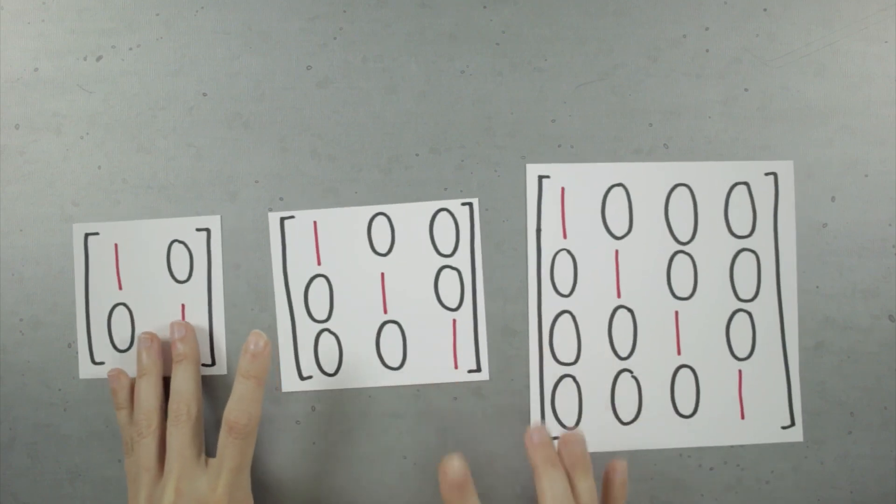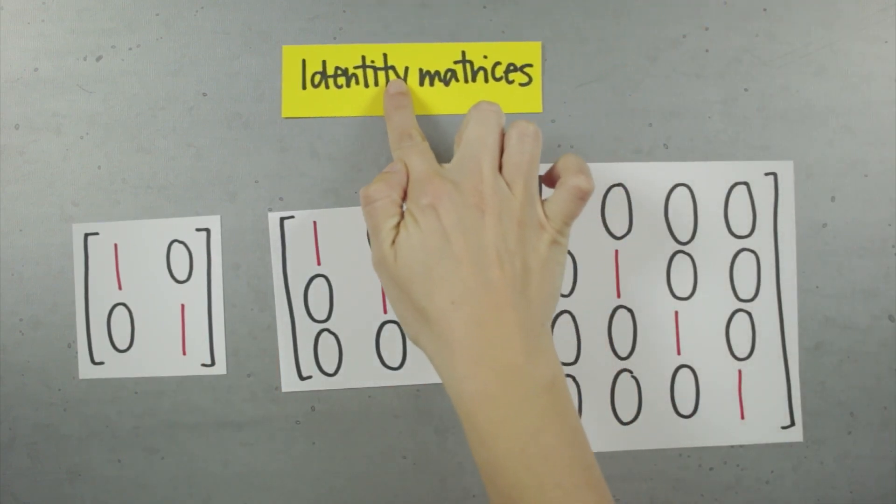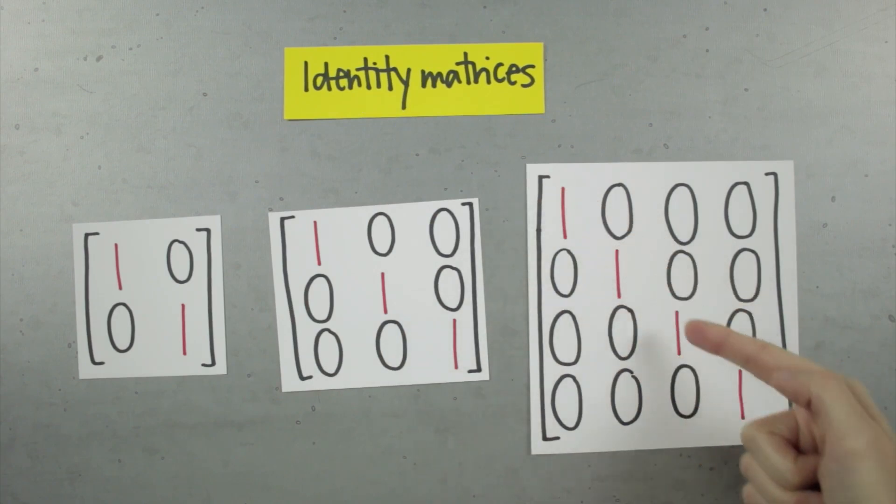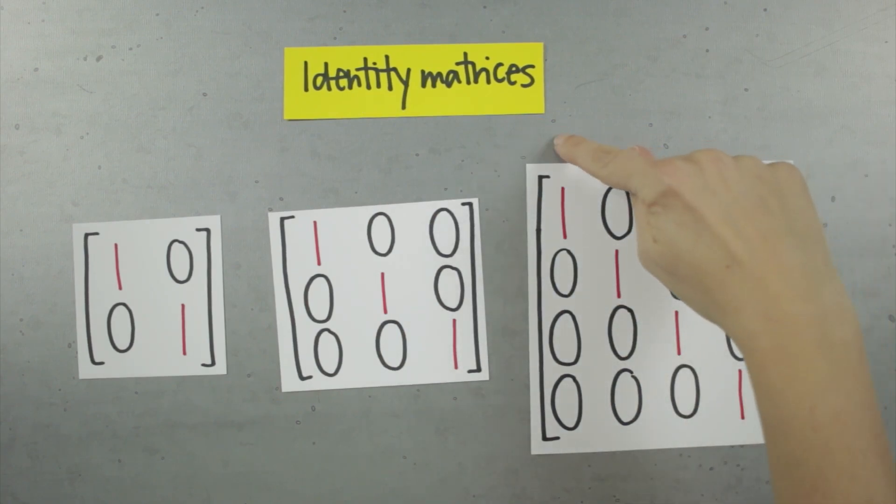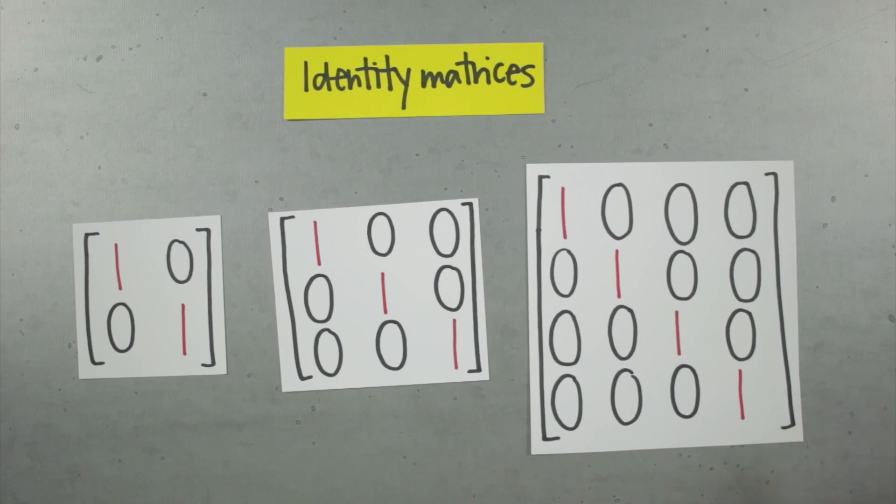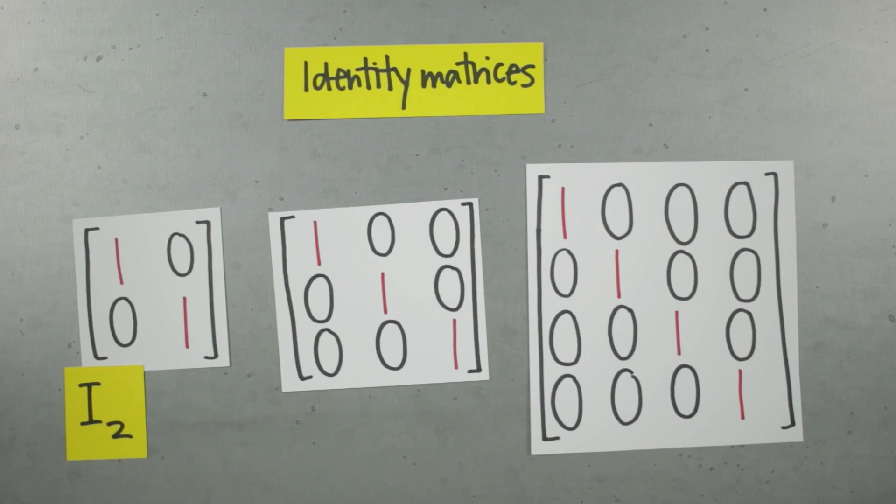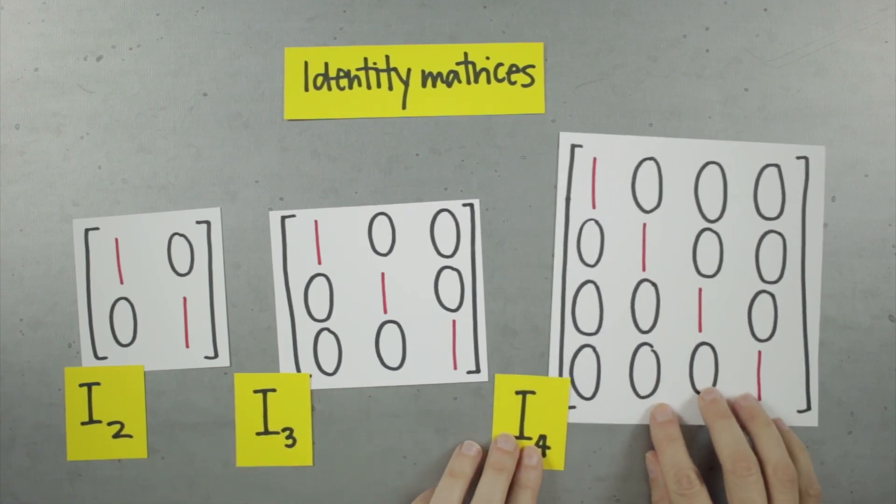Okay, identity matrices. They're important when we're talking about matrix multiplication. These are identity matrices. Any matrix with ones on the diagonal like this, from upper left to lower right, and zeros everywhere else. Identity matrices are always square matrices, meaning that they have the same number of rows and columns. So this is a 2x2 identity matrix, which we can abbreviate as I2. And this is a 4x4 identity matrix, which we can abbreviate as I4.